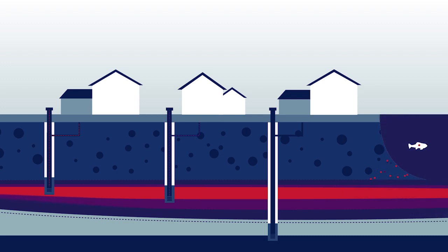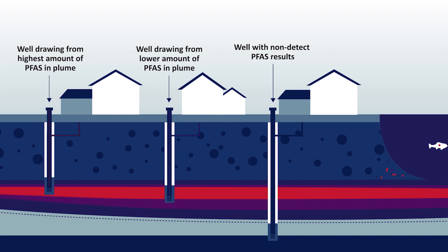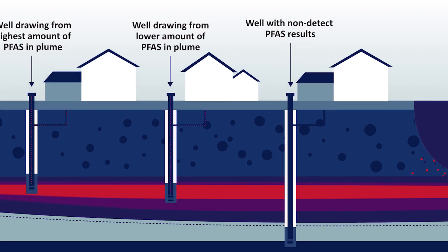Another reason is well depth. Here, the first well is shallower than the others and is drawing water that has the highest amount of PFAS. The second well is deeper and is drawing water with lower amounts of PFAS. The third well is the deepest and is not within the plume — no PFAS is found in that well.